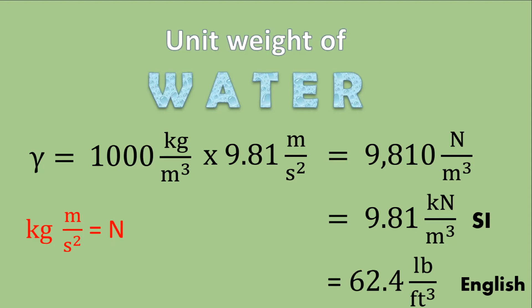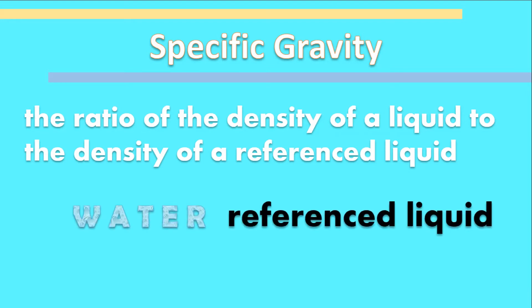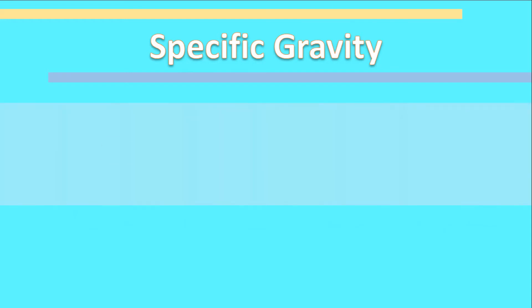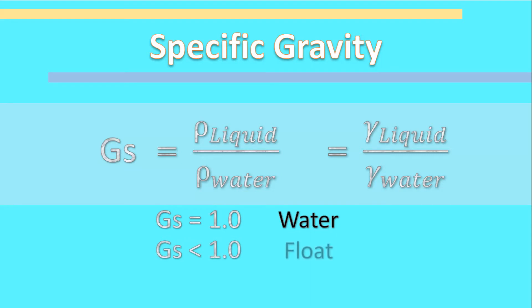To quantify whether an object will float or sink, we use specific gravity. Specific gravity is the ratio of the density of a liquid to the density of a reference liquid — commonly water. The formula is the mass density of the liquid over the mass density of water, or the unit weight of the liquid over the unit weight of water. The specific gravity of water is always 1. If specific gravity is less than 1, the liquid is lighter than water and will float; if greater than 1, it is heavier and will sink.